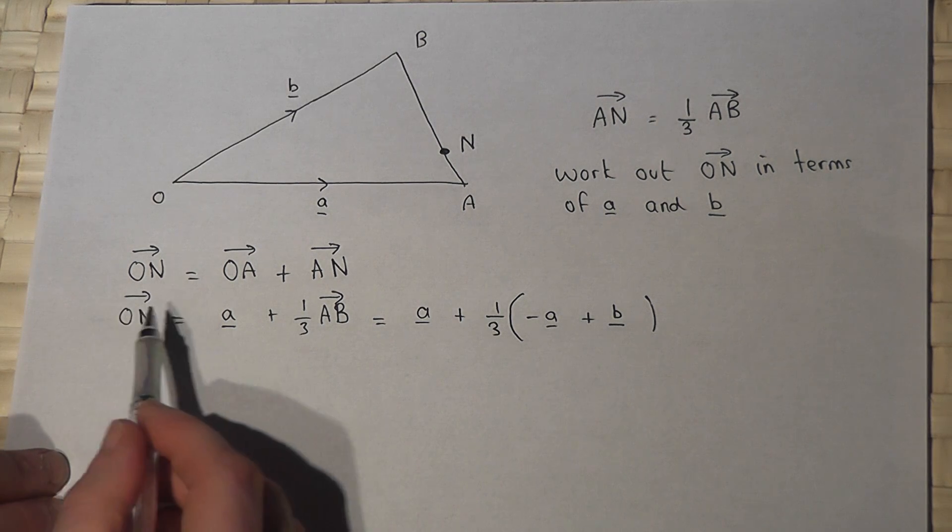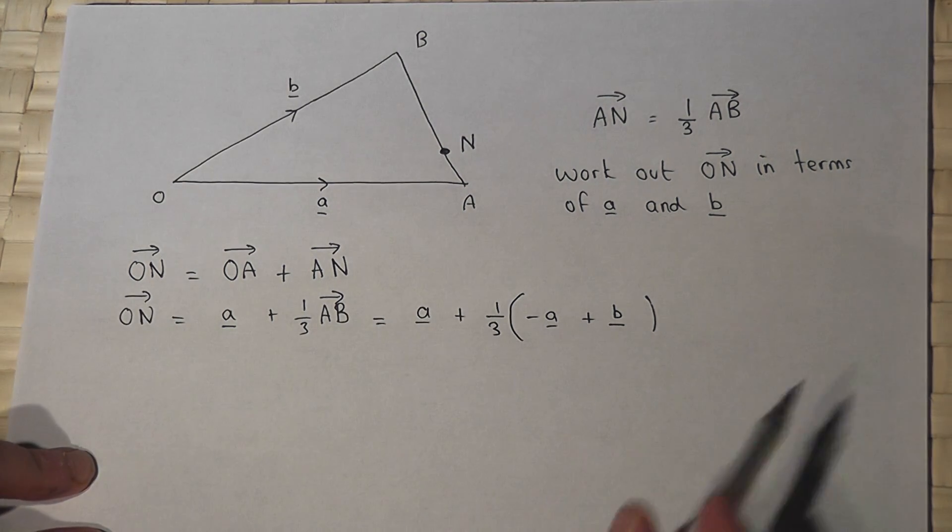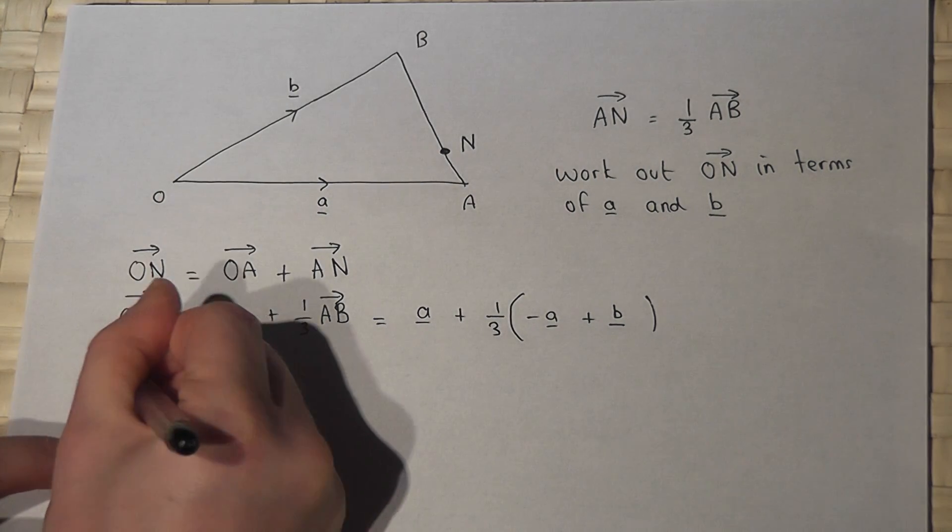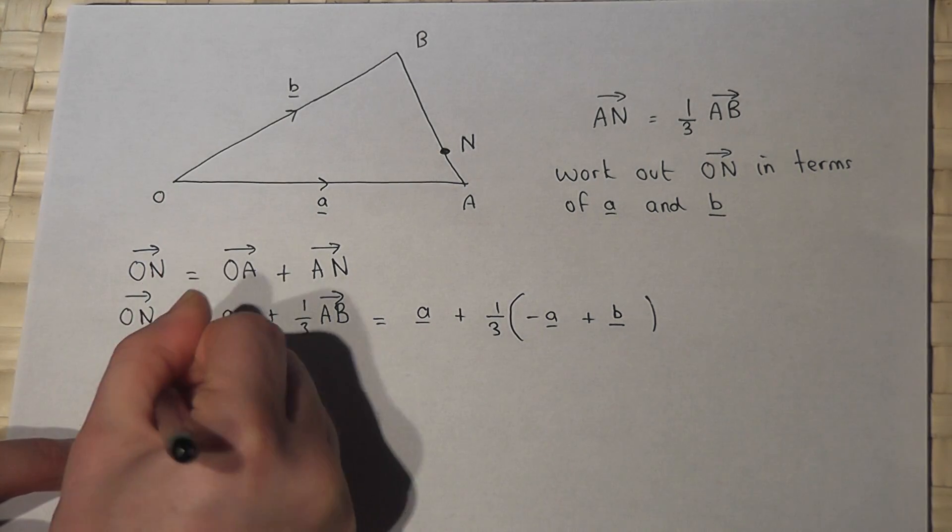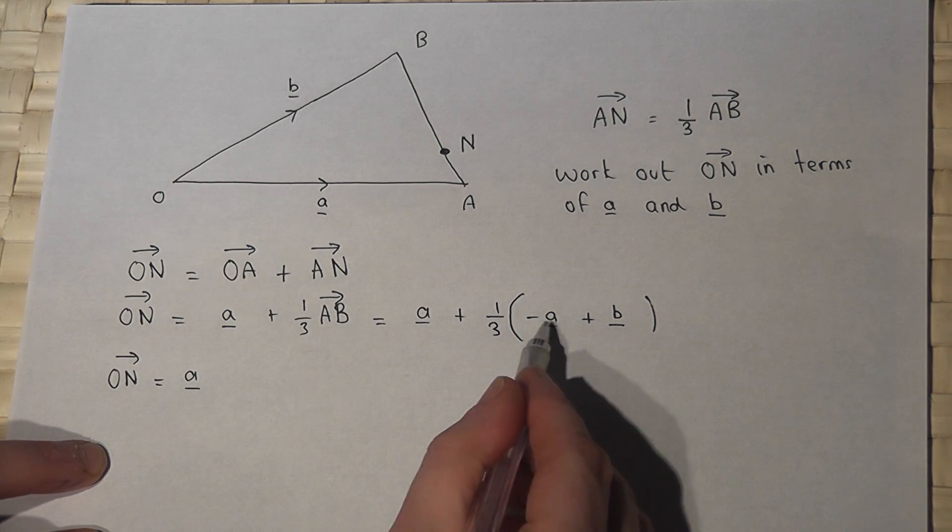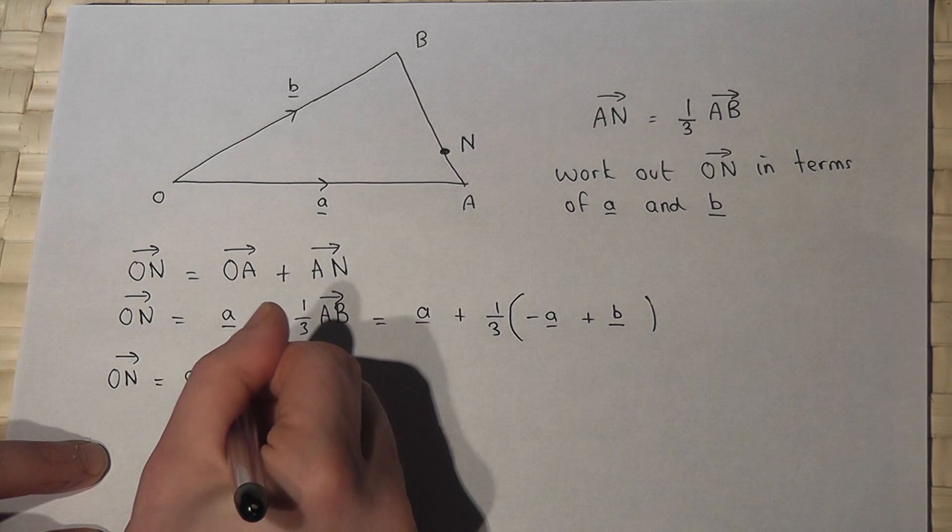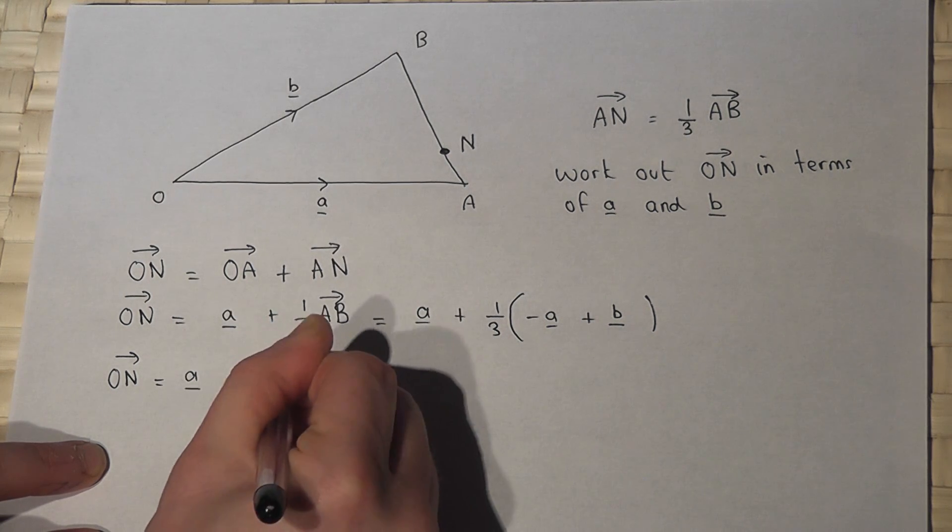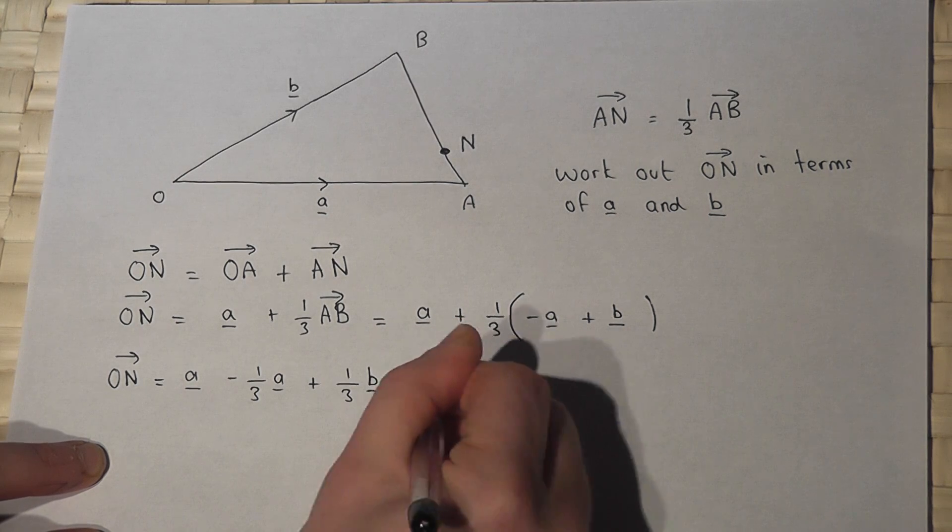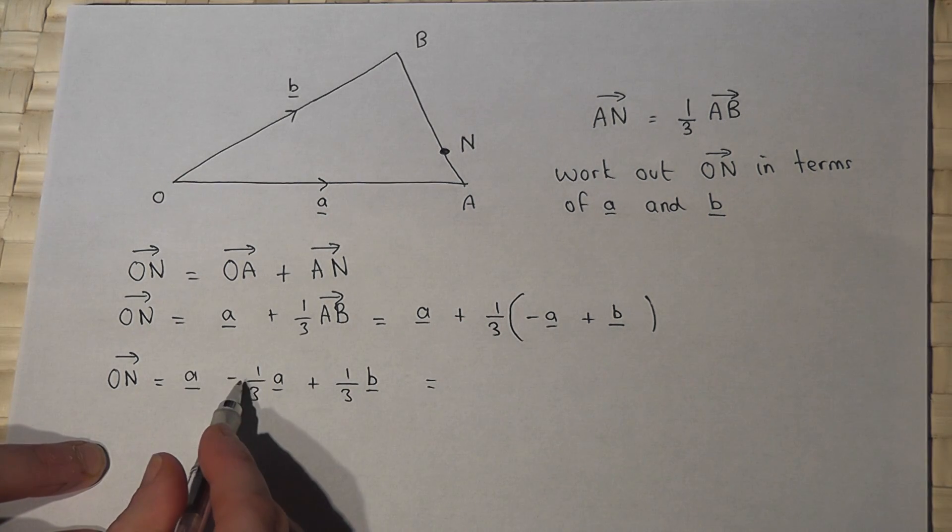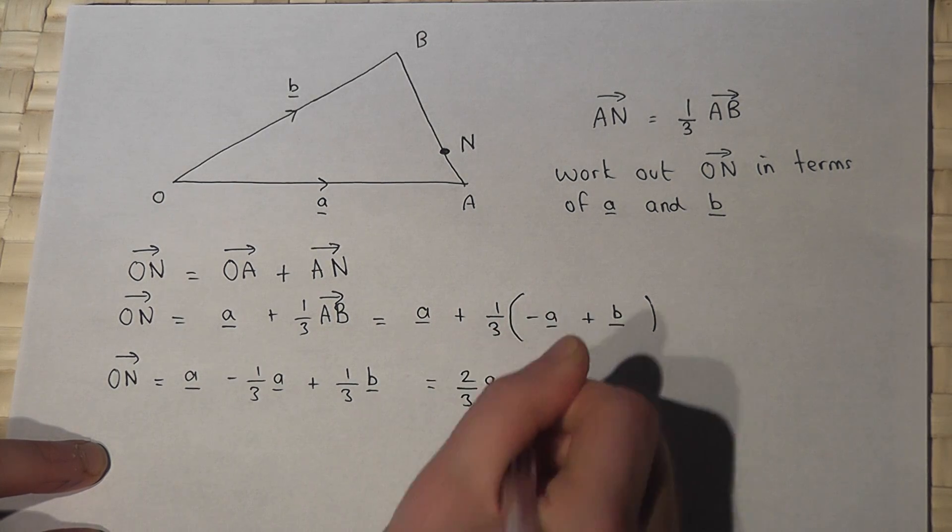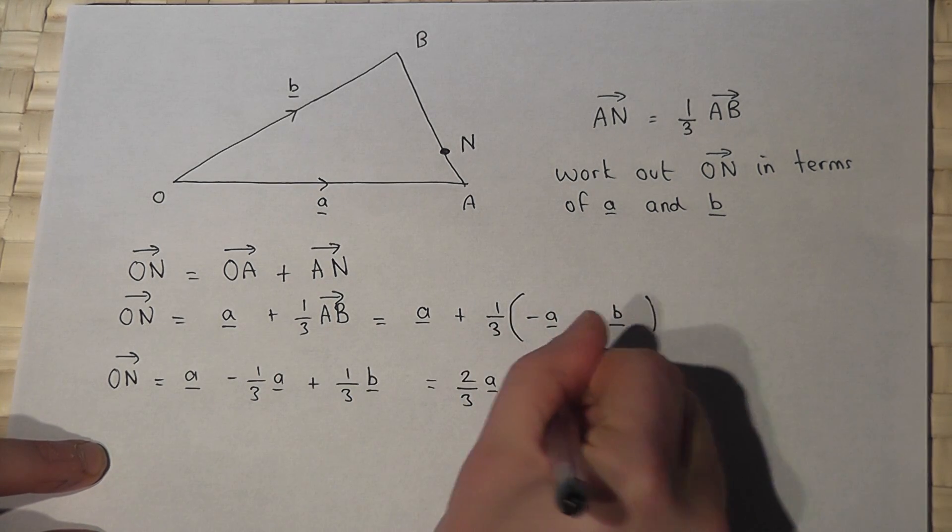So therefore O to N can be written in terms of A's and B's. And it's just left now for me to make this simpler. So O to N. There's vector A. So if I times both of these terms by a third, I get minus a third A plus a third B. Now one whole A, take away a third of A, is just two thirds of A plus a third of B.